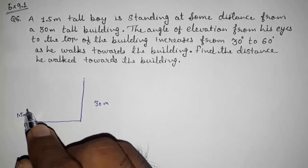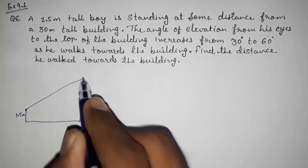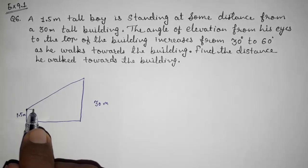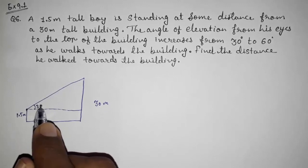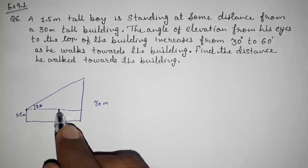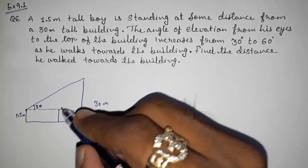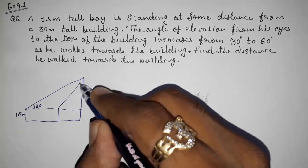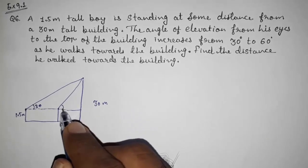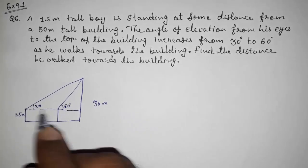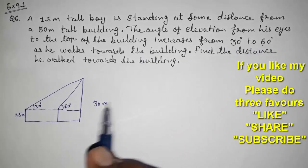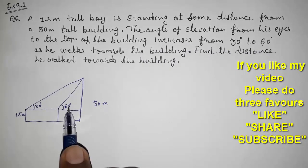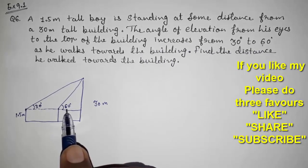Now the boy is looking at the top and it is making an angle of 30 degrees here. The boy is walking towards the building and reaches at some point, again looking at the top of the building, and now the angle is 60 degrees. So it increases from 30 degrees to 60 degrees.